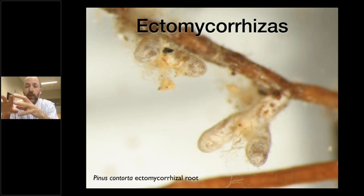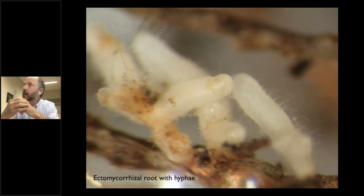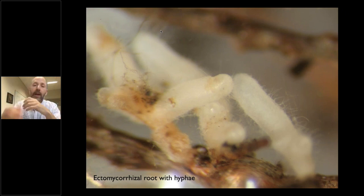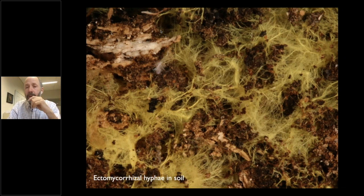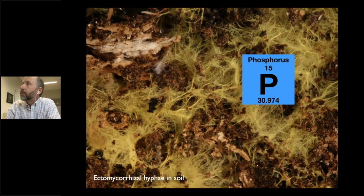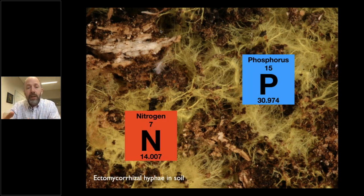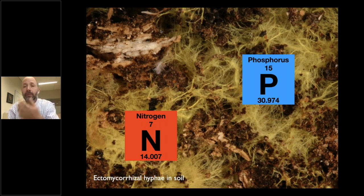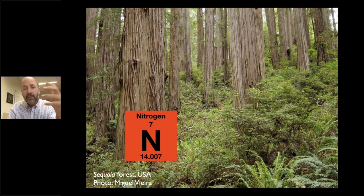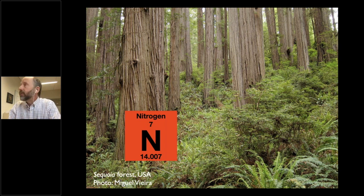Ectomycorrhizae have the fungus growing around the outside of the root, but just like arbuscular mycorrhizae, they have hyphae that extend out into the soil. These hyphae get much more abundant — they can really dominate the organic layers of soil. They play more roles and get more capabilities: they're still taking up nutrients like phosphorus, but when ectomycorrhizae evolved, they also evolved the ability to take up organic nitrogen directly and to short-circuit the nitrogen cycle. Because of that ability, we saw a change in the world's forests. Before the evolution of pines, the world was covered with things like redwoods and podocarps. But ectomycorrhizal plants could come in and lock up that organic nitrogen, allowing them to take over those forests and start to dominate.